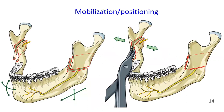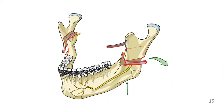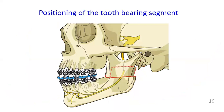A special bone spreader can be used to mobilize the segments. Some movements, such as superior positioning of the tooth-bearing segment, will require removal of bone to allow for good alignment of the respective segments. Mandibular-maxillary fixation is performed to position the tooth-bearing segment to the desired relationship with the maxilla.